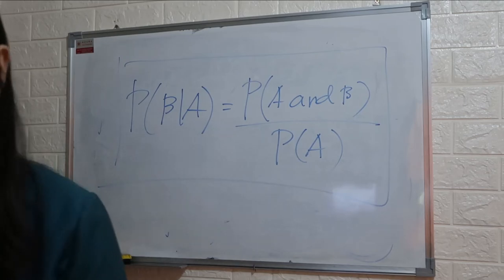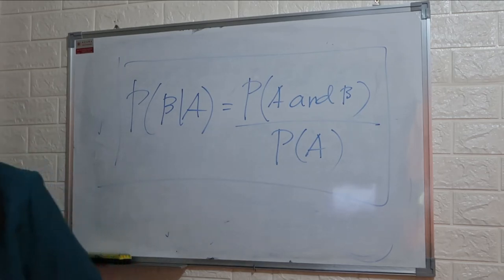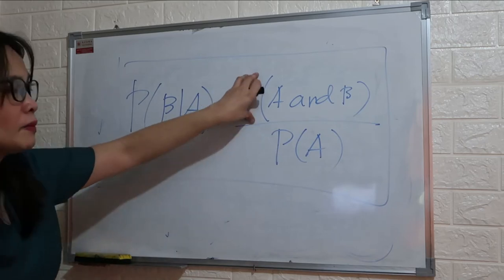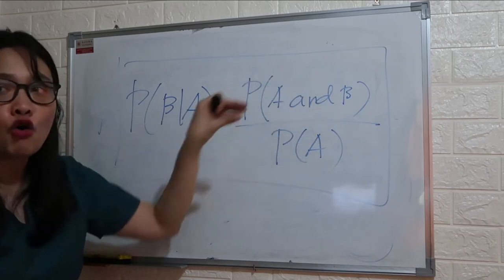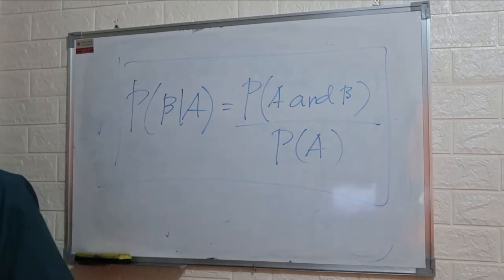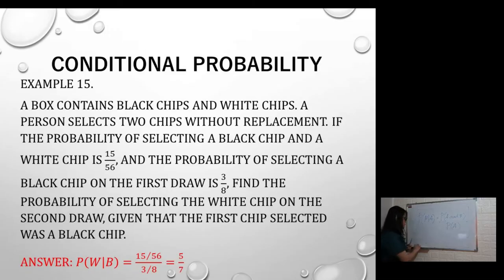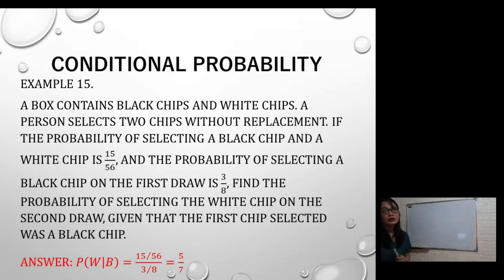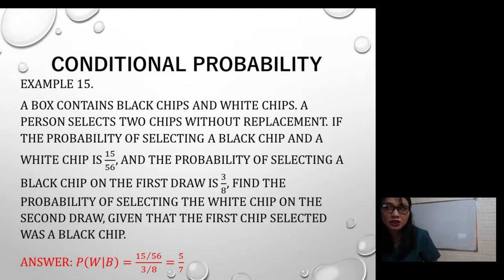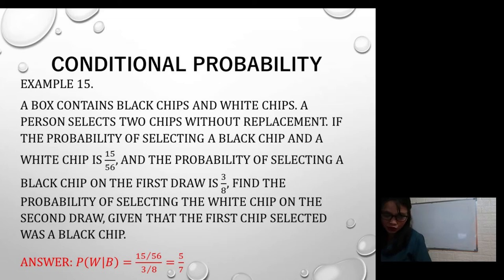So the probability of B given A is equal to the probability of A and B over the probability of A. That's conditional probability. For example, number 15: a box contains black chips and white chips.